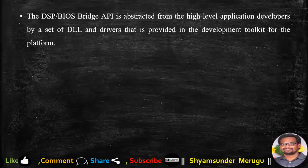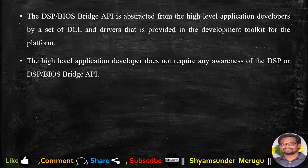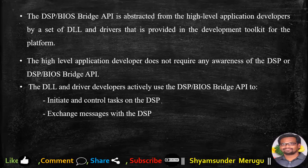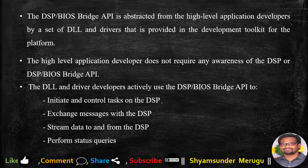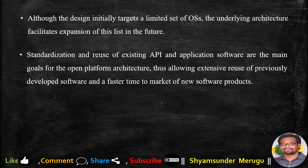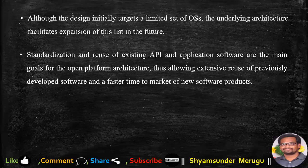The DSP Bridge API is abstracted from high-level application developers by a set of DLL and drivers provided in the development toolkit for the platform. The high-level application developer does not require any awareness of the DSP or DSP Bridge API. The DLL and driver developers actively use the DSP Bridge API to initiate and control tasks on the DSP, exchange messages with the DSP, stream data to and from the DSP, and perform status queries. Although the design initially targets a limited set of operating systems, the underlying architecture facilitates expansion of this list in the future.